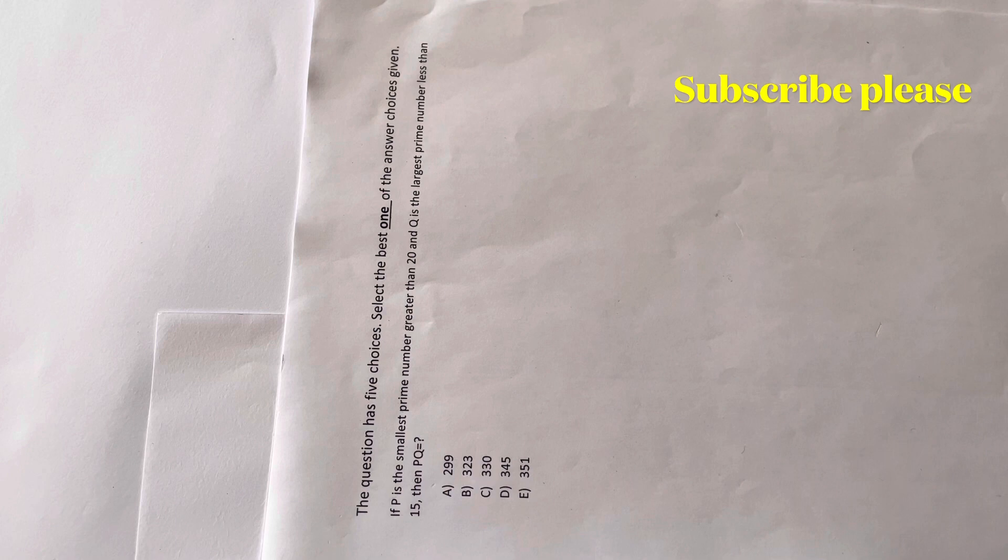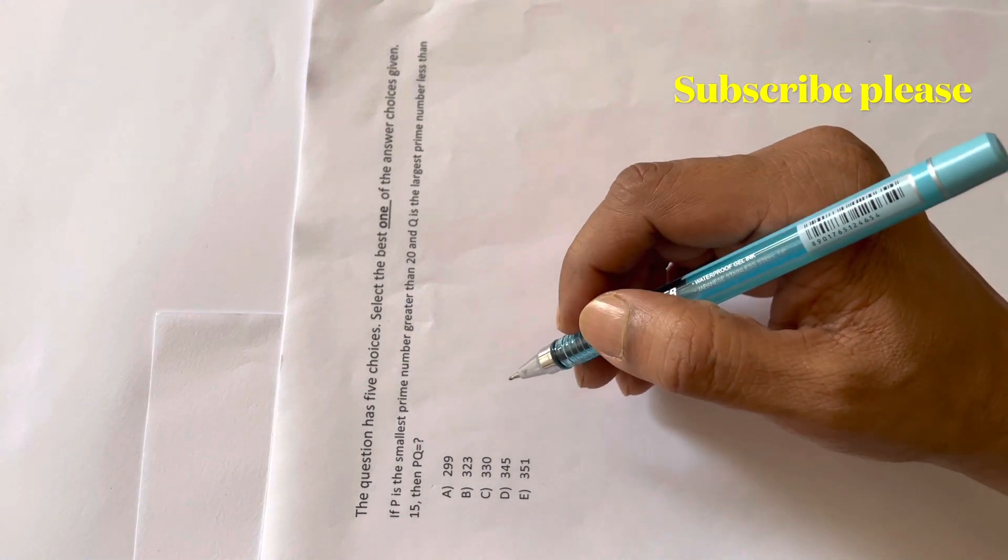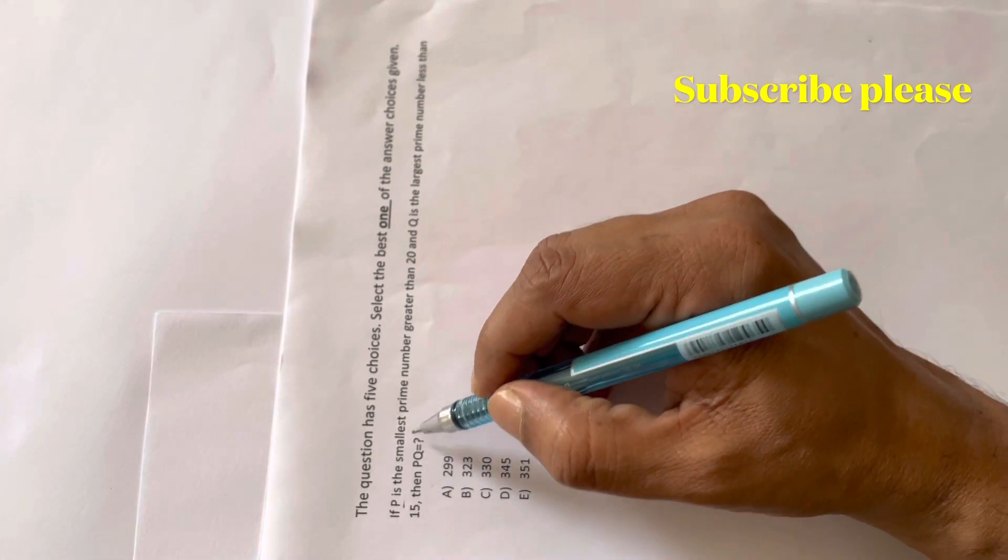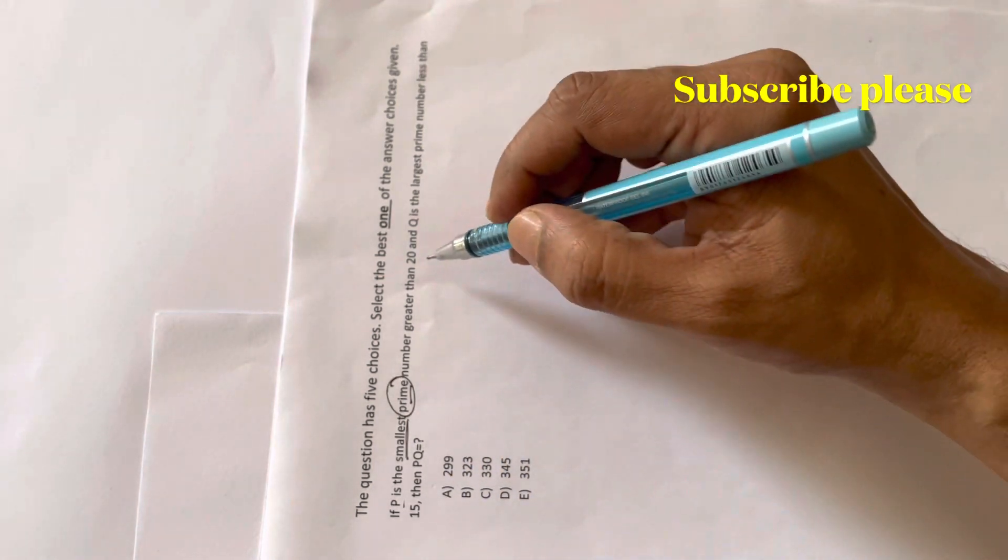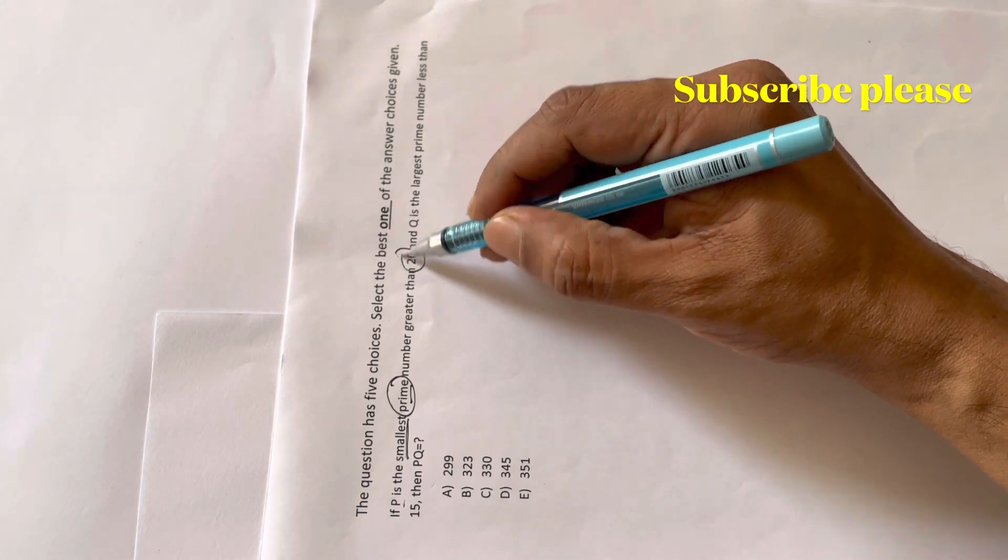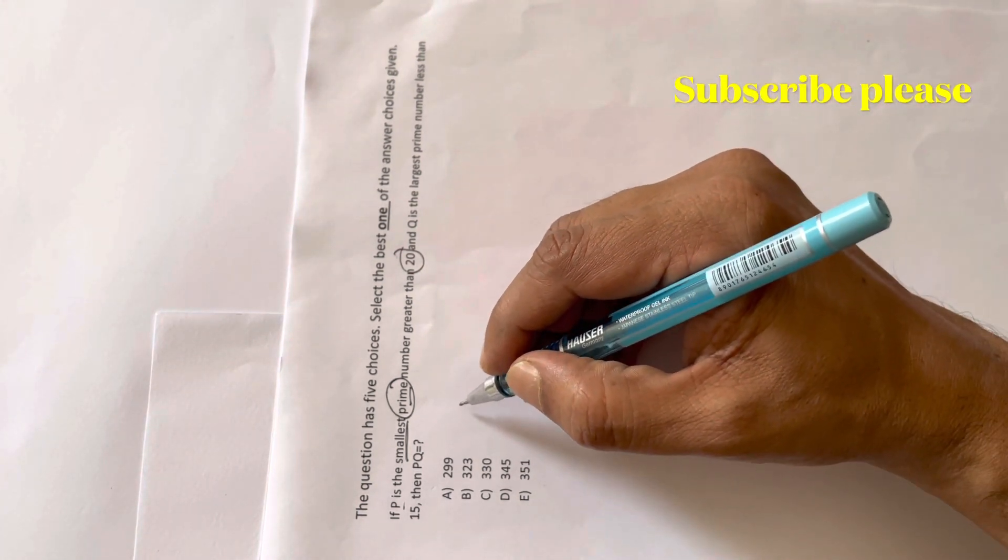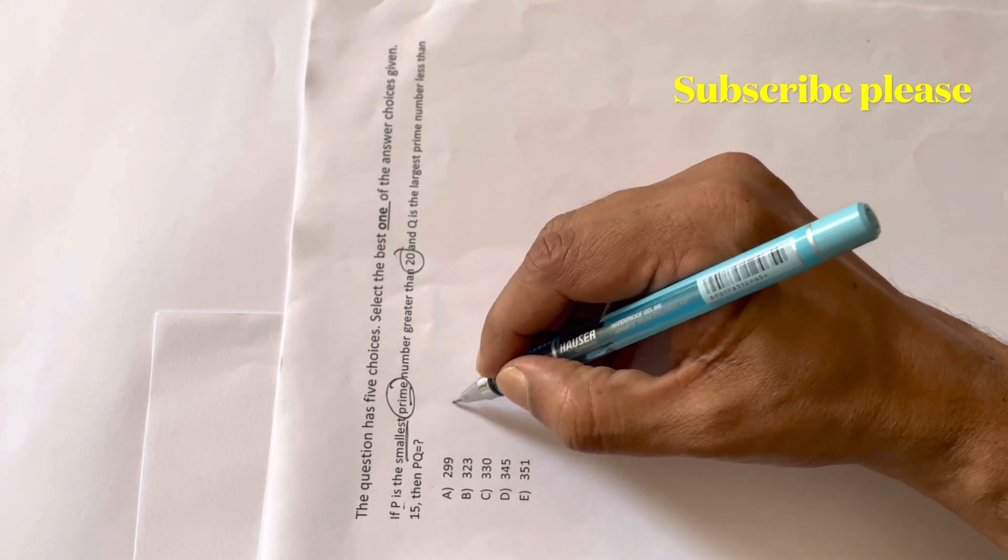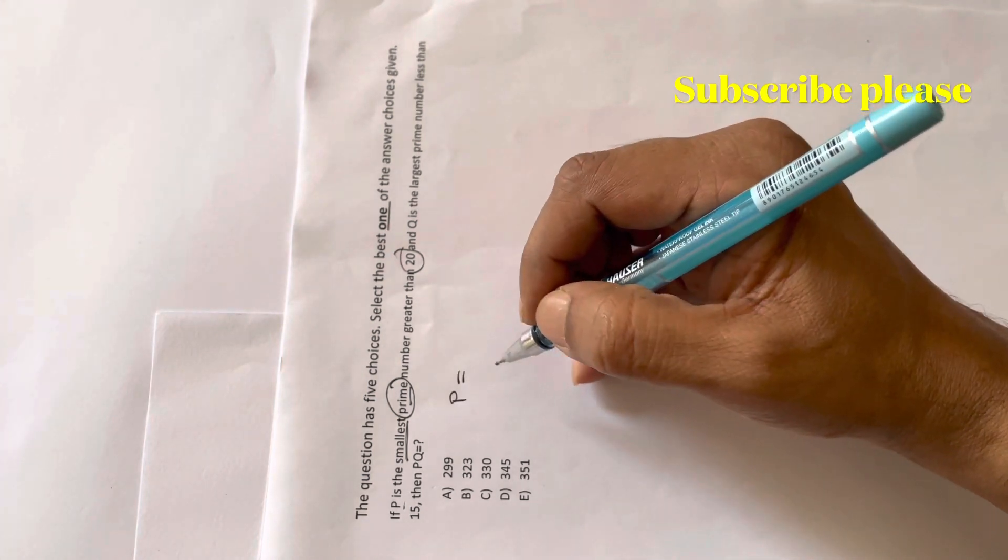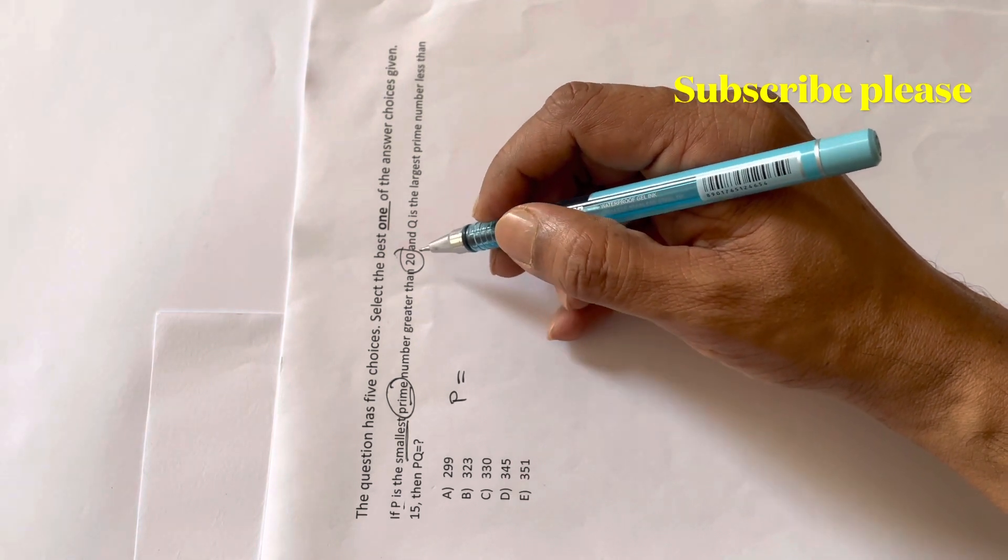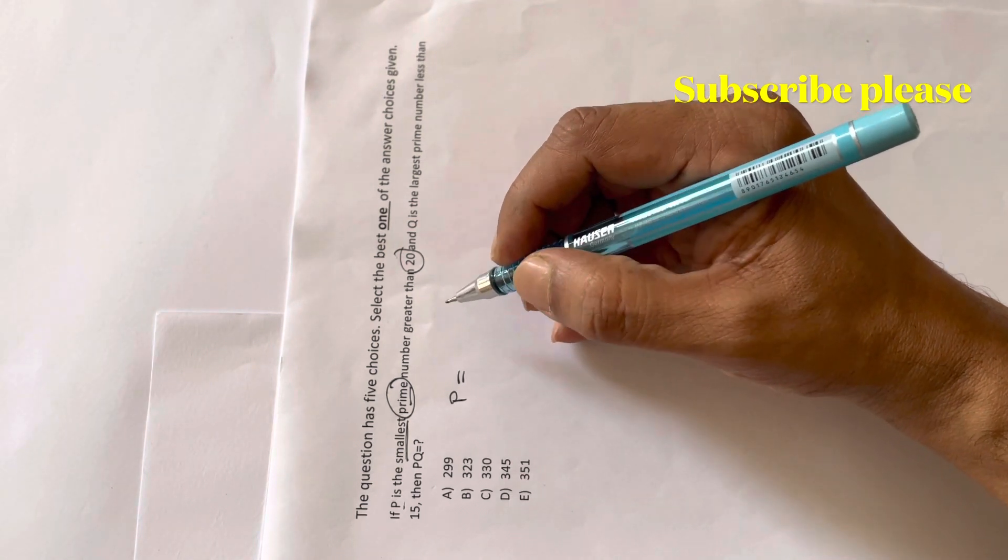So let's start. P is the smallest prime number greater than 20. So after 20, p equals the prime number greater than 20, that is the smallest prime number.